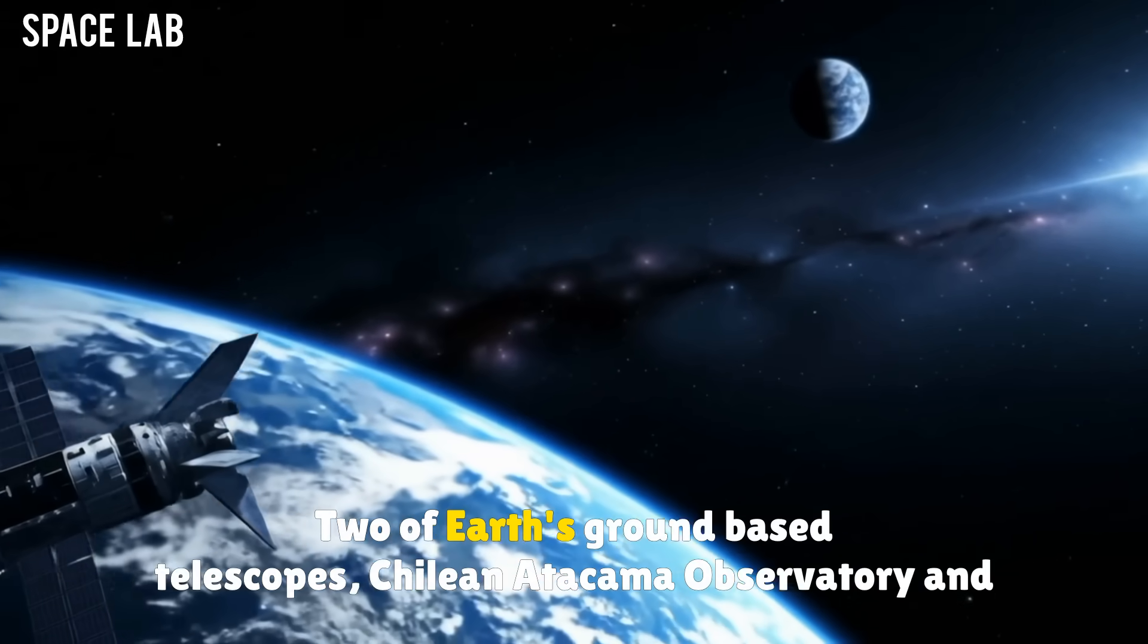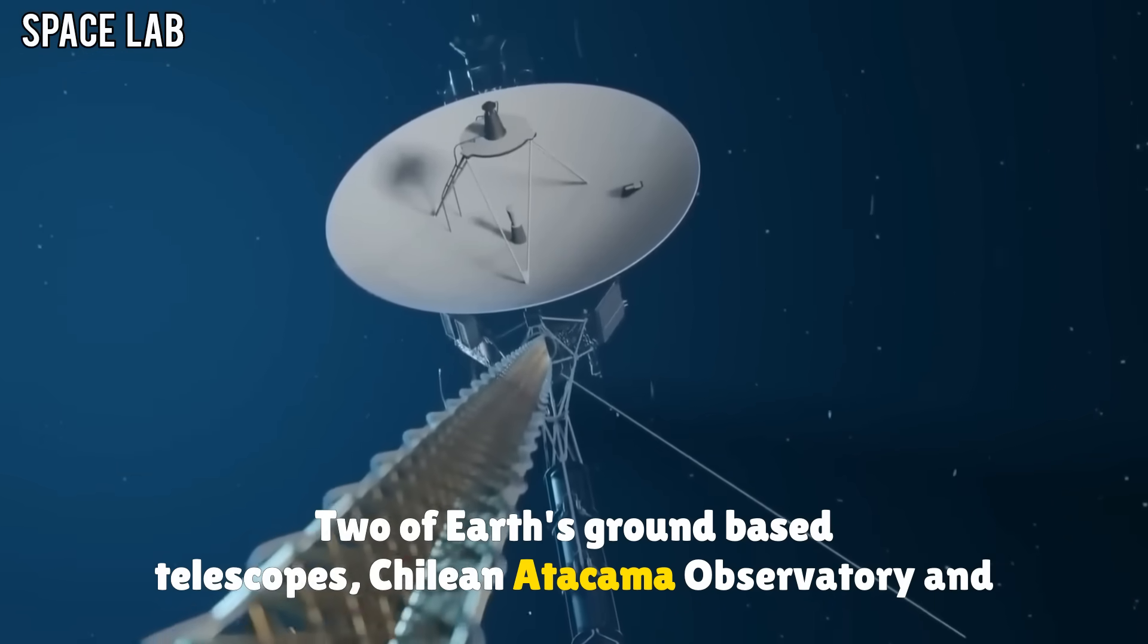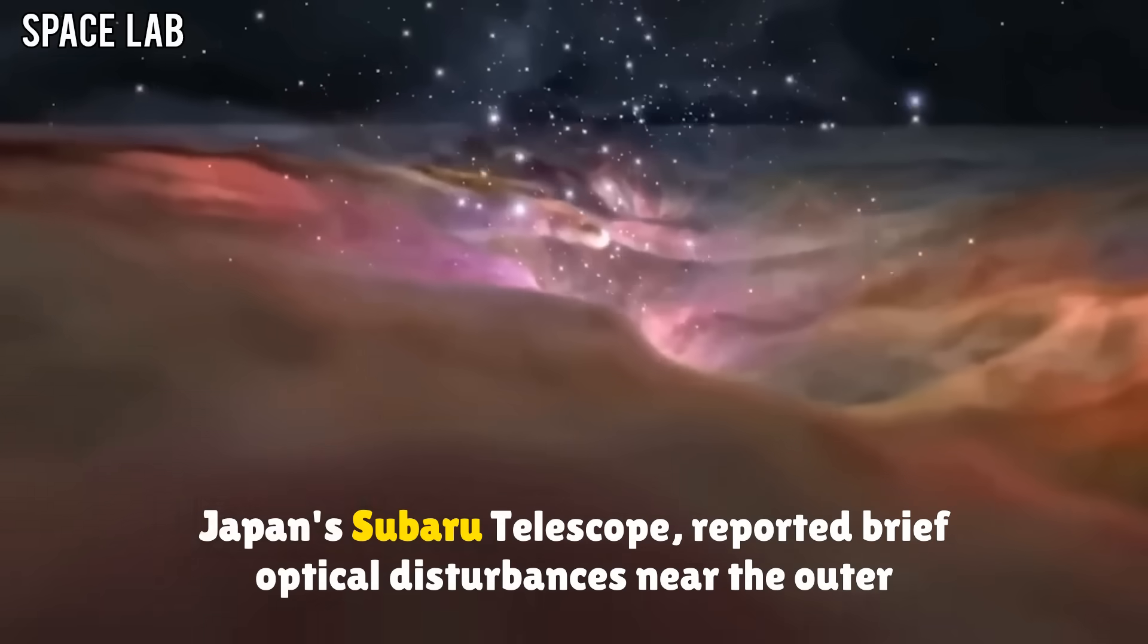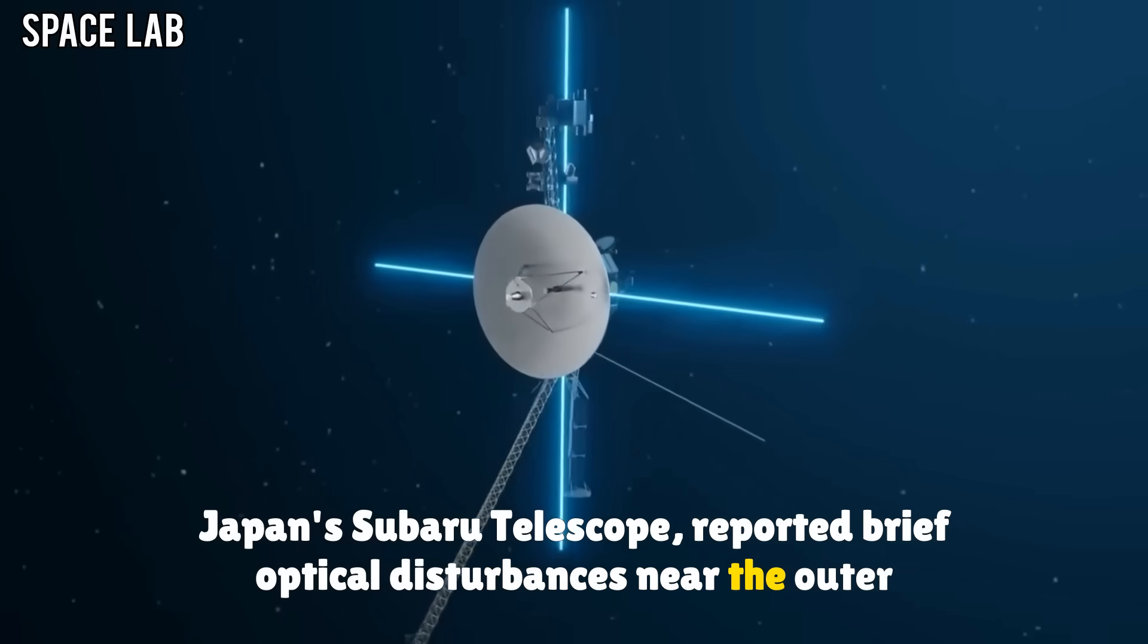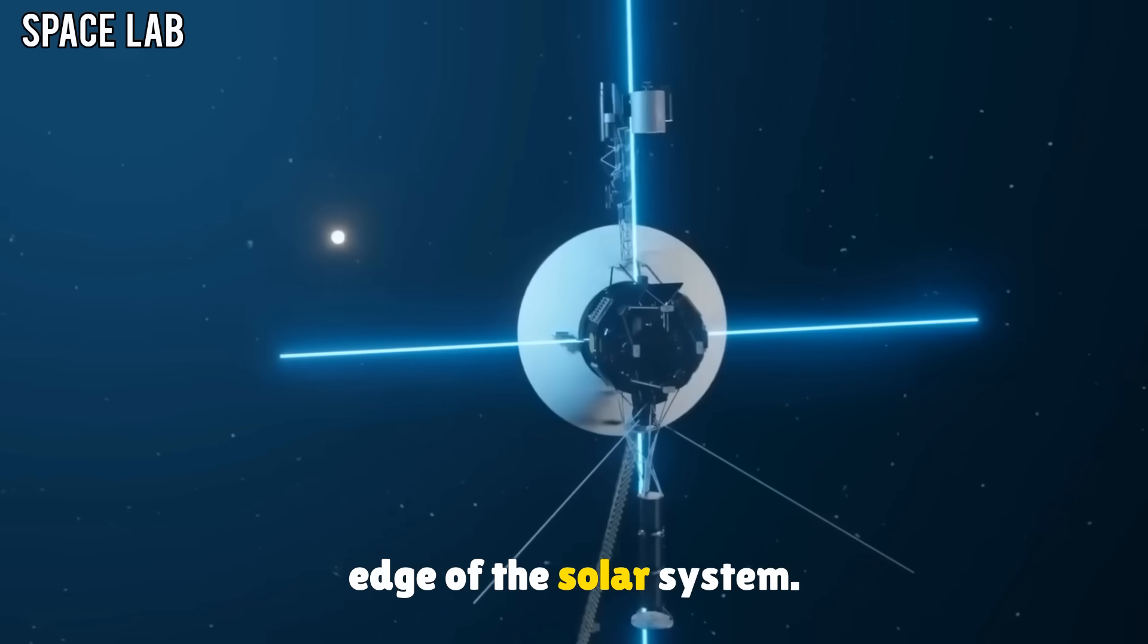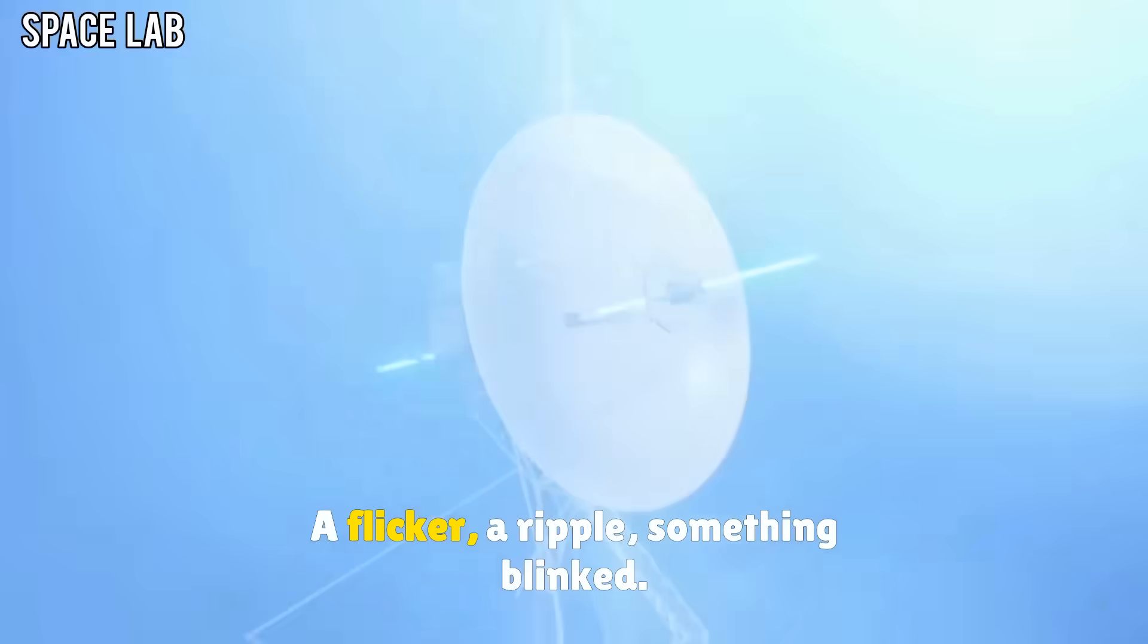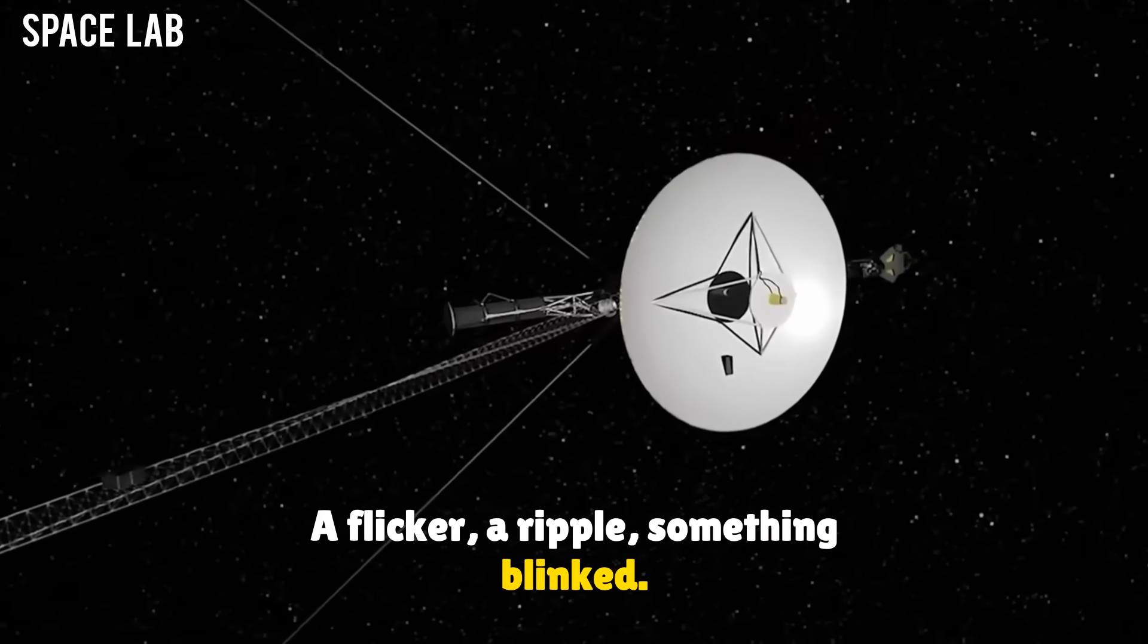Two of Earth's ground-based telescopes, Chilean Atacama Observatory and Japan's Subaru telescope, reported brief optical disturbances near the outer edge of the solar system. A flicker. A ripple. Something blinked.